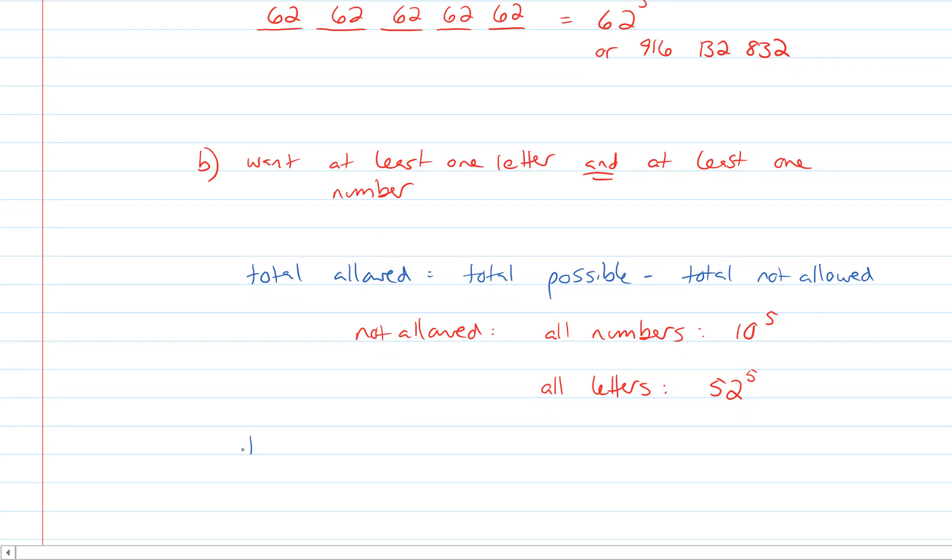Going back to our total allowed then, it's going to be equal to the total possible, which we said earlier was 62 to the five minus all of the letters and all the numbers. So 10 to the five minus 52 to the five.